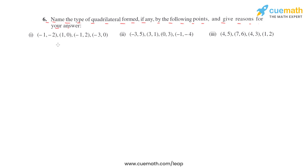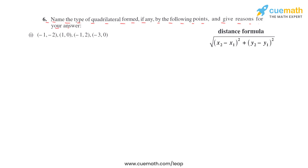The distance formula is: square root of (x2 minus x1) whole square plus (y2 minus y1) whole square. The points in the first part are: A = (−1, −2), B = (1, 0), C = (−1, 2), and D = (−3, 0). We will find sides AB, BC, CD, and AD, then find diagonals AC and BD.